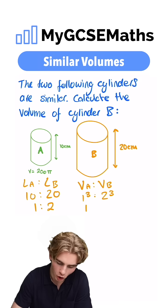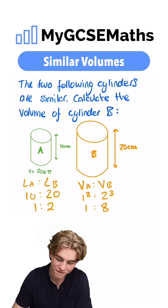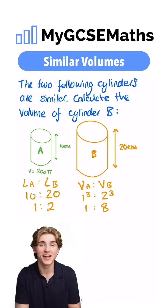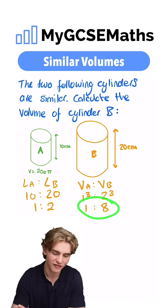1 cubed is just going to be 1. 2 cubed is going to be 8. So we know the ratio in the volumes is 1 to 8. That means the volume of B has to be 8 times the volume of A.